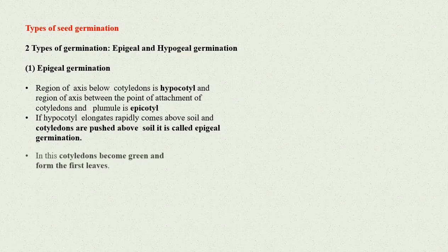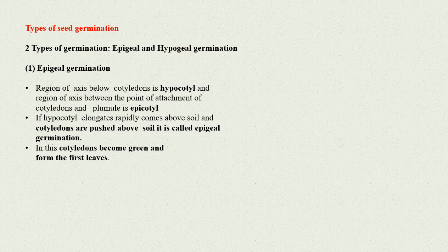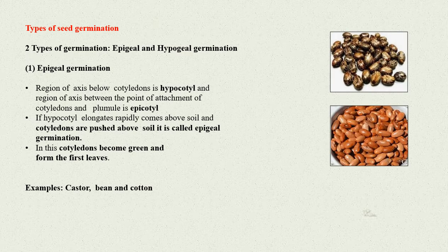In this, the cotyledons become green and form the first leaves. Examples are castor, bean, and cotton.